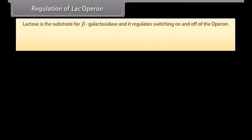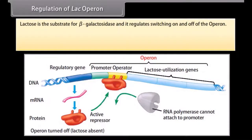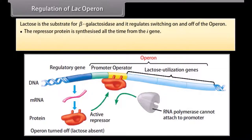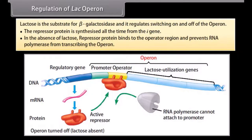Lactose is the substrate for beta-galactosidase and it regulates the switching on and off of the operon. When lactose is absent, the repressor protein is synthesized all the time from the I gene. In the absence of lactose, repressor protein binds to the operator region and prevents RNA polymerase from transcribing the operon.